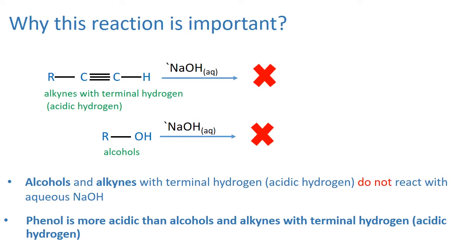Why is the sodium hydroxide and phenol reaction important in organic chemistry? It is used to compare the acidity of organic compounds such as alkenes, alcohols, phenol, and carboxylic acids. Alcohols and alkenes which contain a terminal hydrogen do not react with aqueous sodium hydroxide; therefore, phenol is more acidic than alcohols and alkenes which contain a terminal hydrogen.